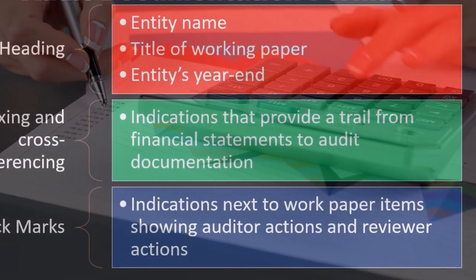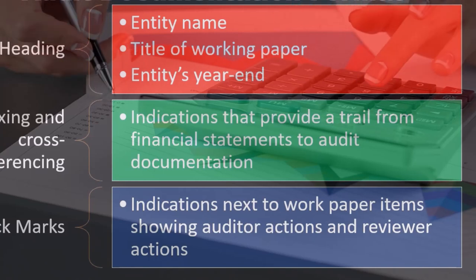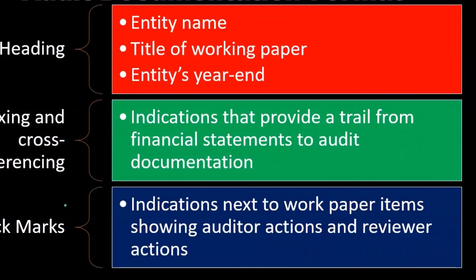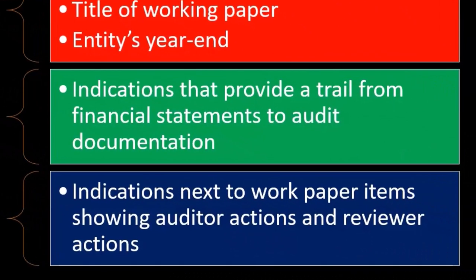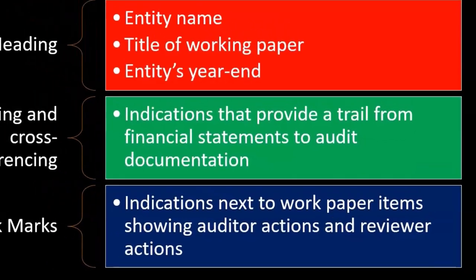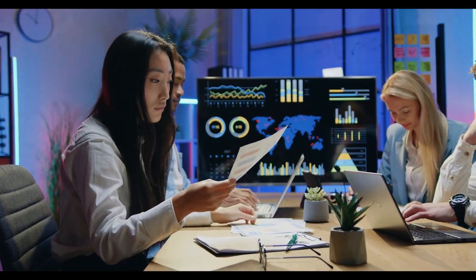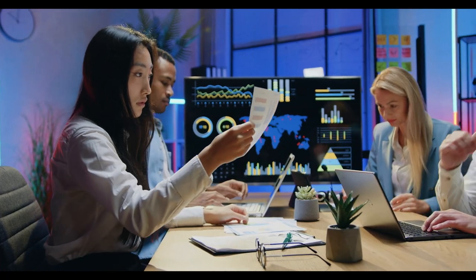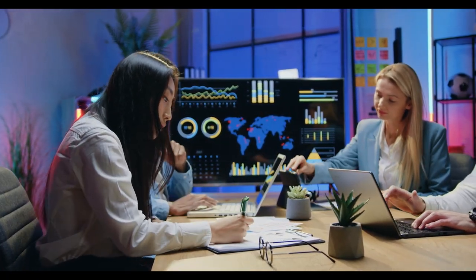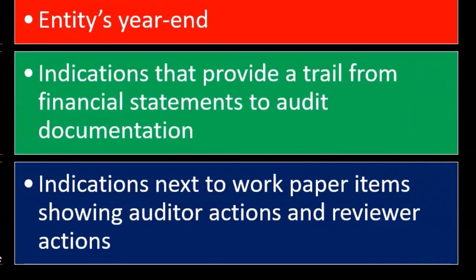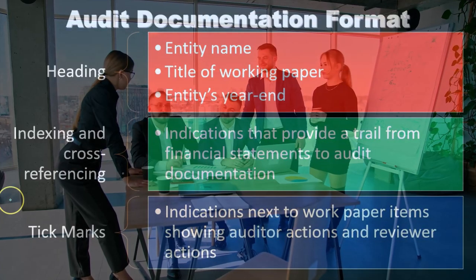Then we have tick marks — indications next to work paper items showing auditor actions and reviewer actions. Different organizations may use different methods for their tick marks and for their indexing and cross-referencing, but we need to have some indication of those. We need to know the entity, the title, the year end, the account being worked on, who is putting together the information, and who is reviewing it. CPA firms will typically have a systematic set of formats for their indexing, cross-referencing, and tick marks.